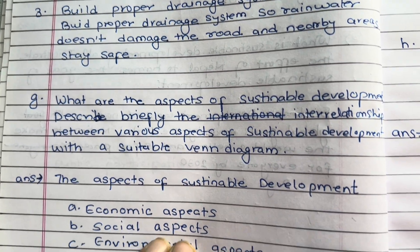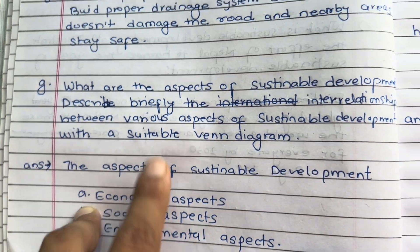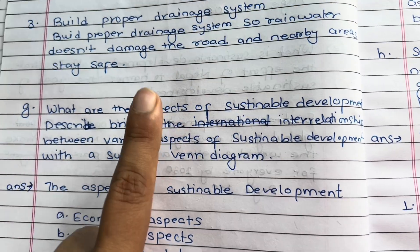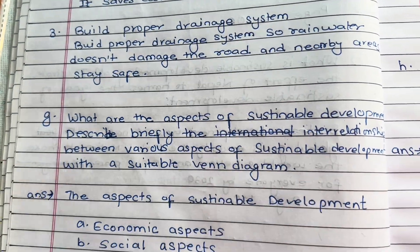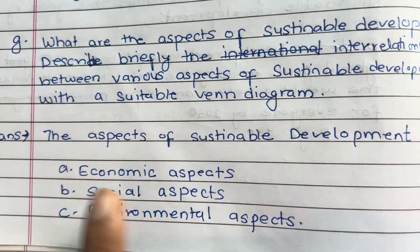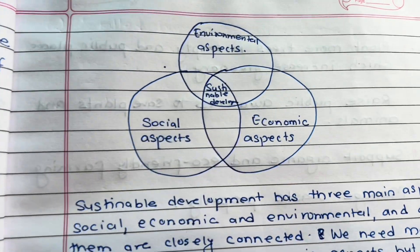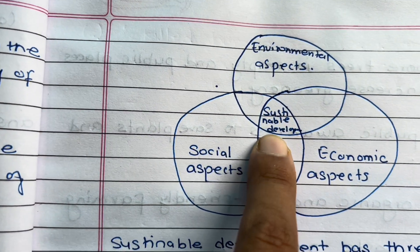Sustainable development has three main aspects: the economic aspect, the social aspect, and the environmental aspect.